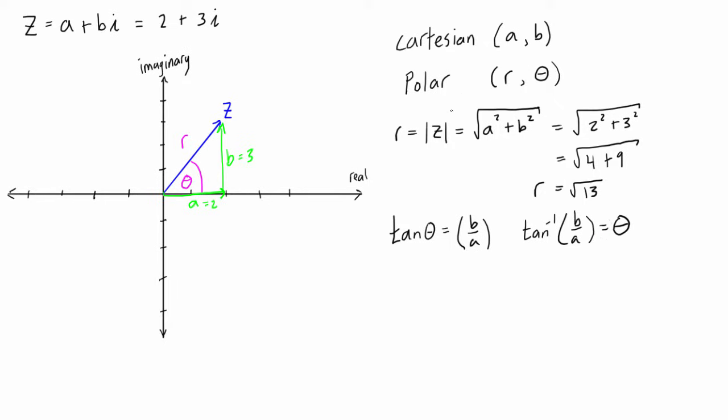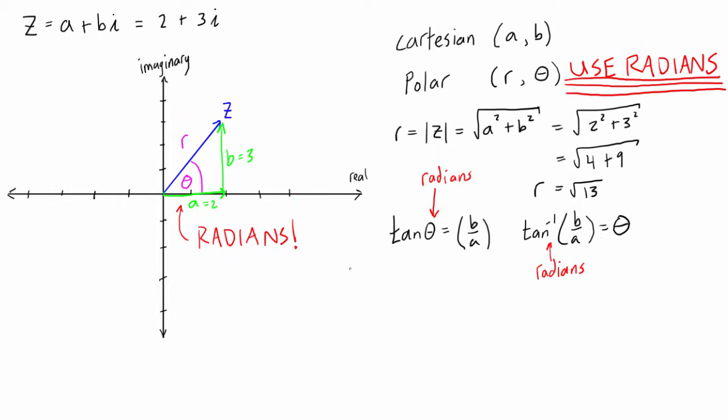And if you remember, when we're dealing with polar coordinates we should be using radians. The theta we call the argument of z. Sometimes you'll be hearing that.